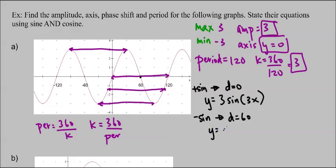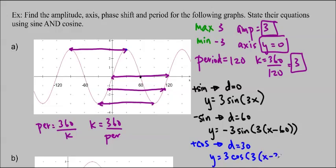So we're going to do negative sine, so it's negative 3 sine 3, x minus 60, plus 0. So, if I want to use negative sine, I can. Or I could use cos as well. So if I wanted to use positive cos, then I'm going to start at the maximum, and I'm going to work my way downwards. And you can see that the phase shift is equal to half of 60, so this is 30. So I'll write y equals 3 cos 3, x minus 30, plus 0.